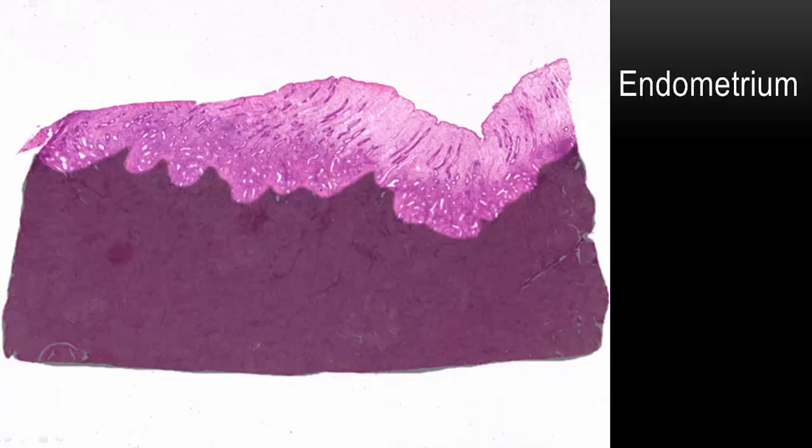In this view of the uterine wall, the muscle layer is darkened and we see only the surface, or the endometrium, of the uterus. This is the layer of the uterus that is sloughed off during menstruation.